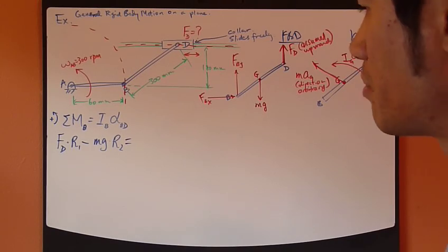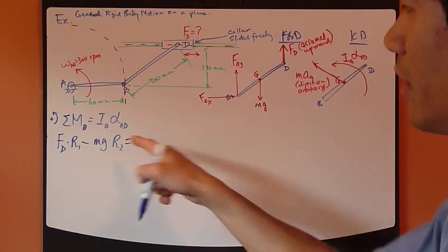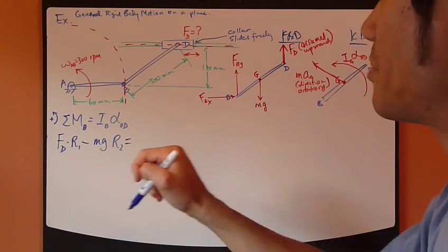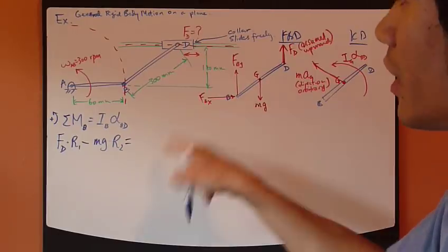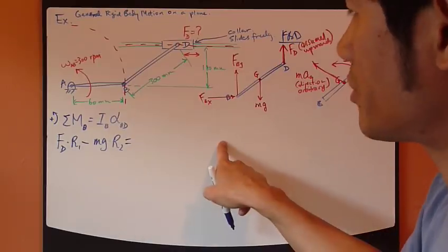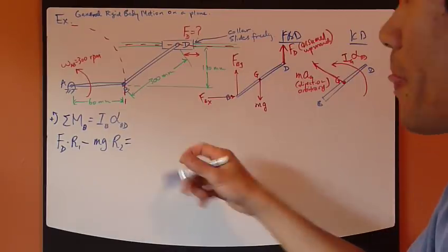So, we cannot use the equation in the back of the book for I_B or slender rod. But instead, we need to split that into two terms using parallel axis theorem.